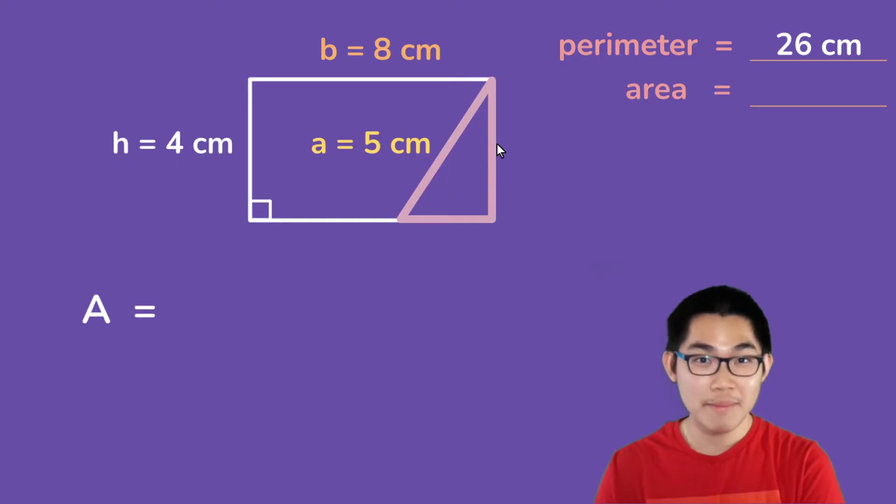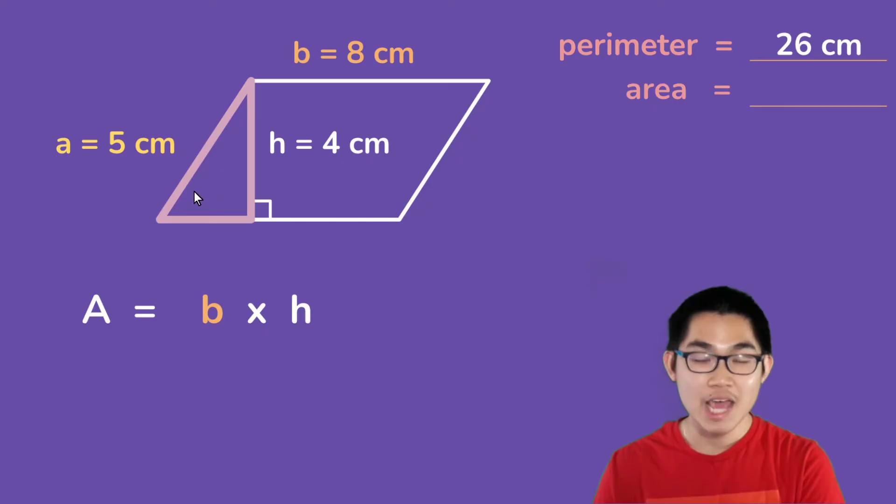So if you remember from my last video, the area of a rectangle is the base times the height. So it turns out that the area of a parallelogram is the same as the area of a rectangle. And so for now I'm going to move this back to the left side and we have the original shape.